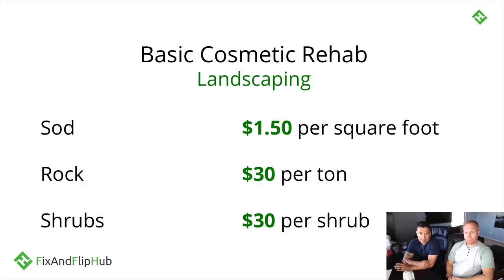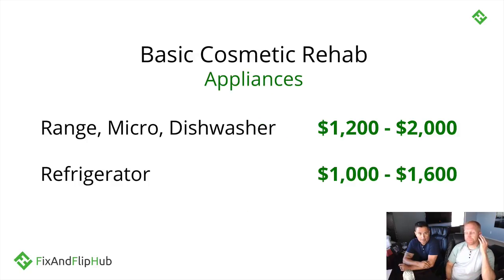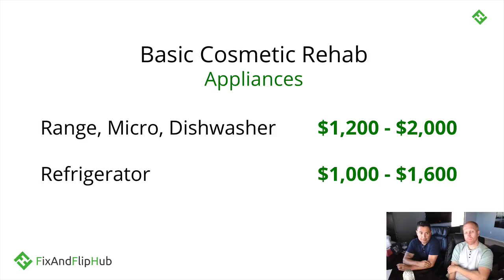For landscaping: sod is $1.50 per square foot, gravel or rock — popular in Arizona — is $30 per ton, and shrubs are $30 each. For appliances, a basic package including range, microwave, and dishwasher runs $1,200 to $2,000. A refrigerator is $1,000 to $1,600.